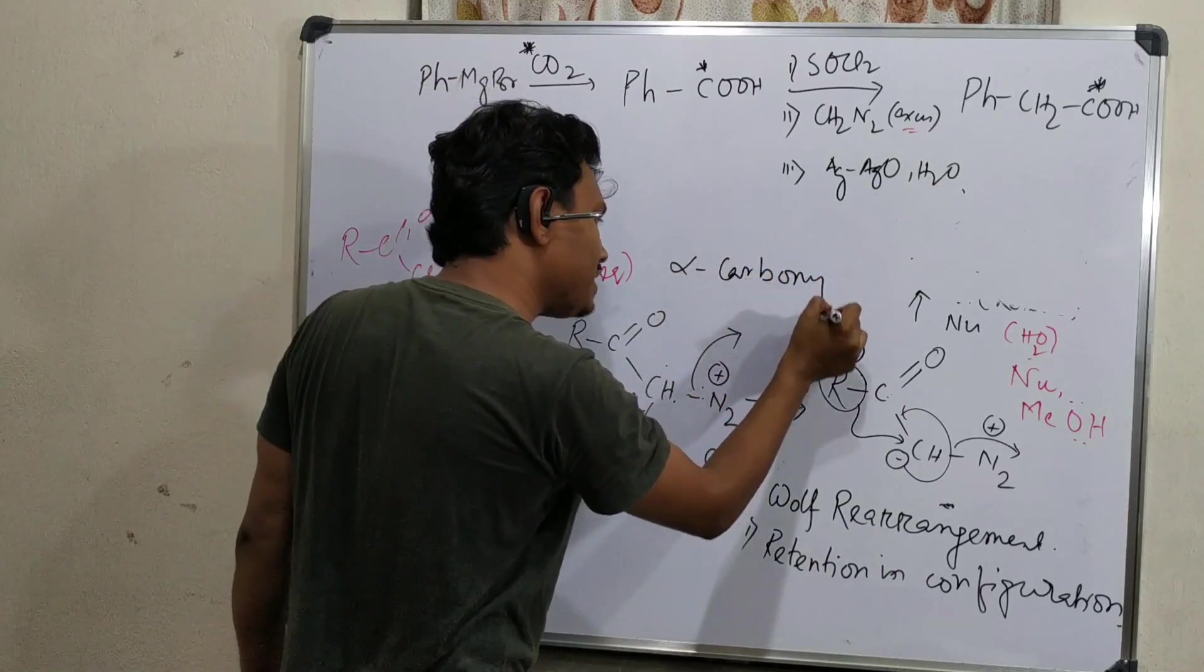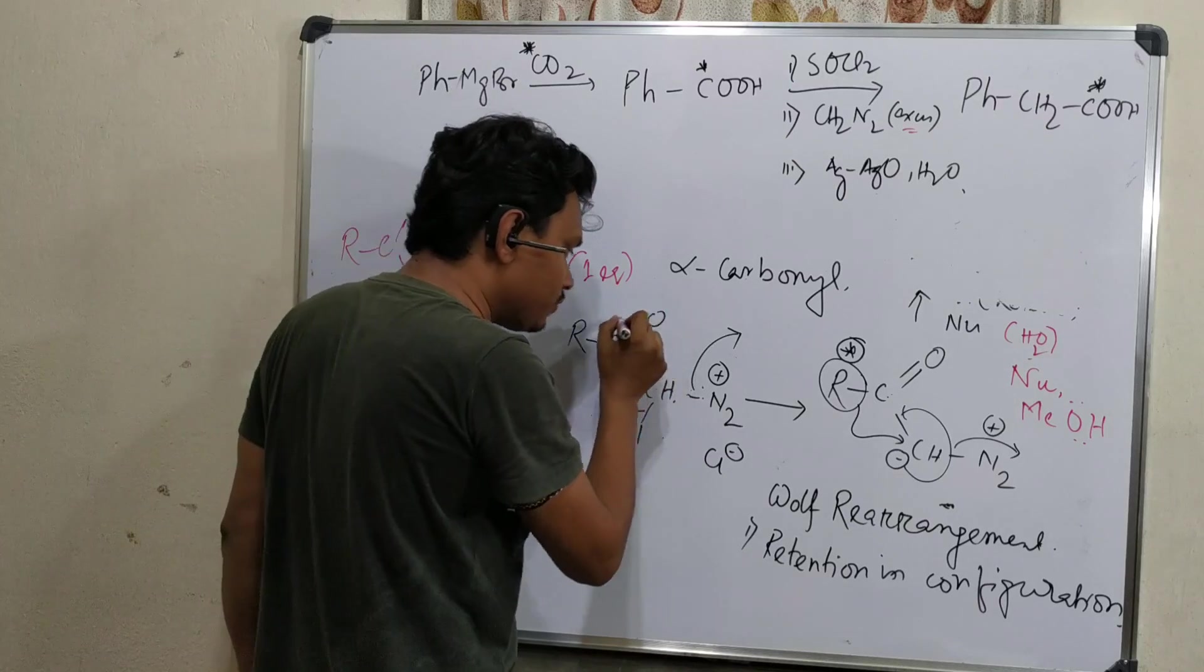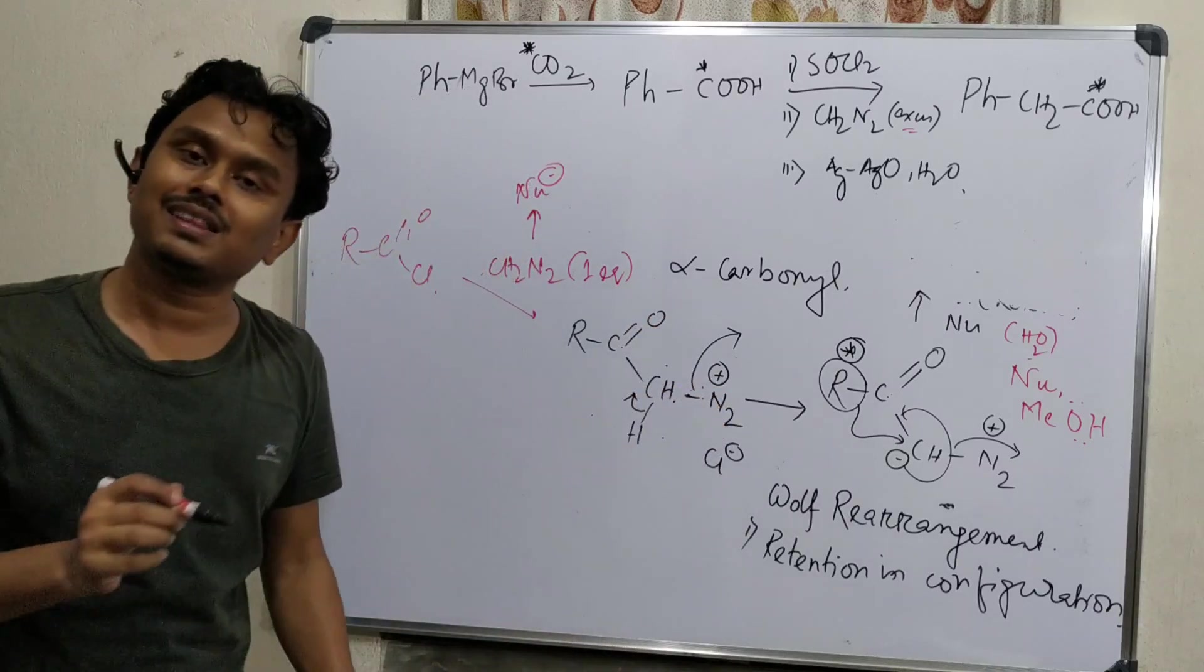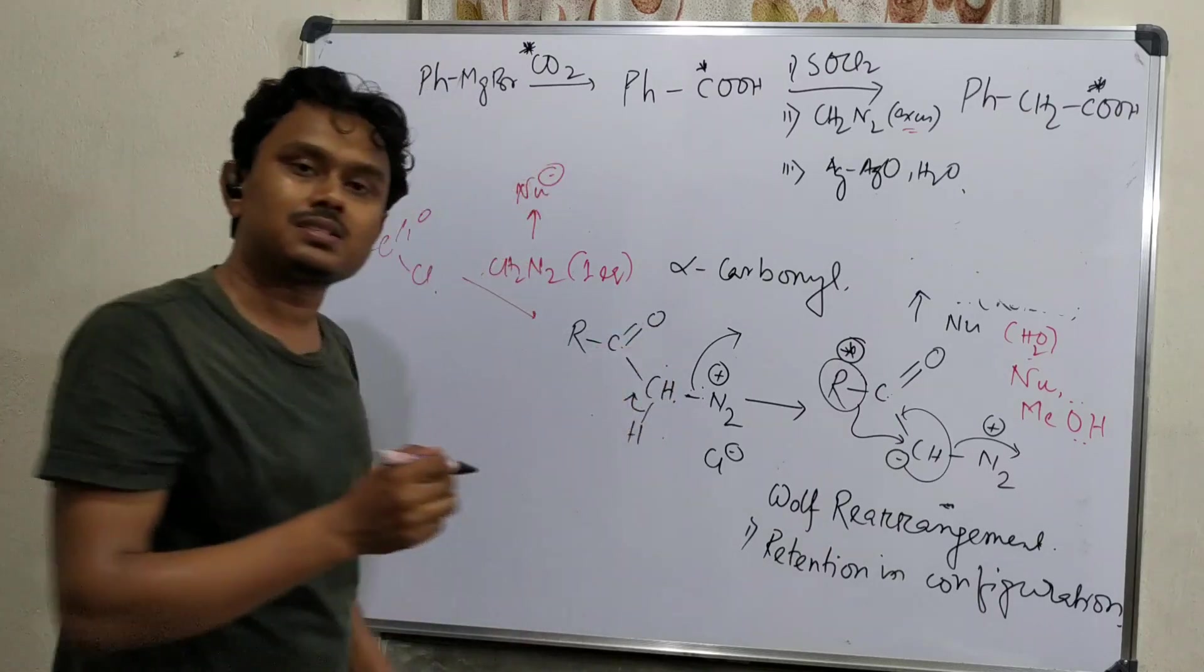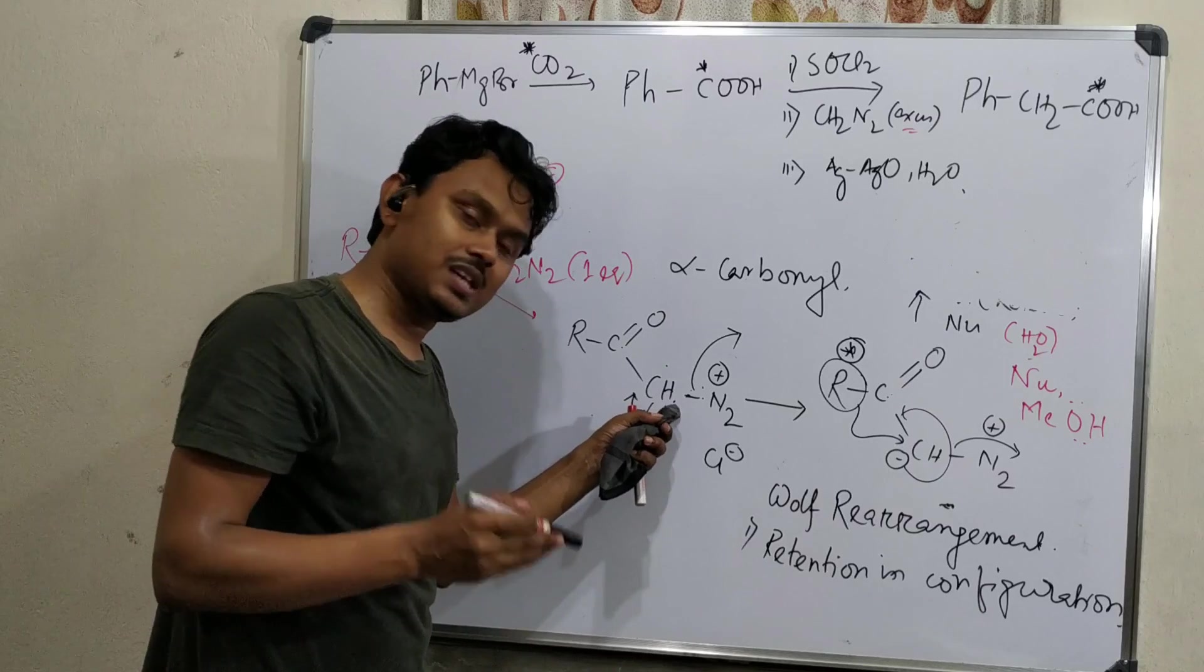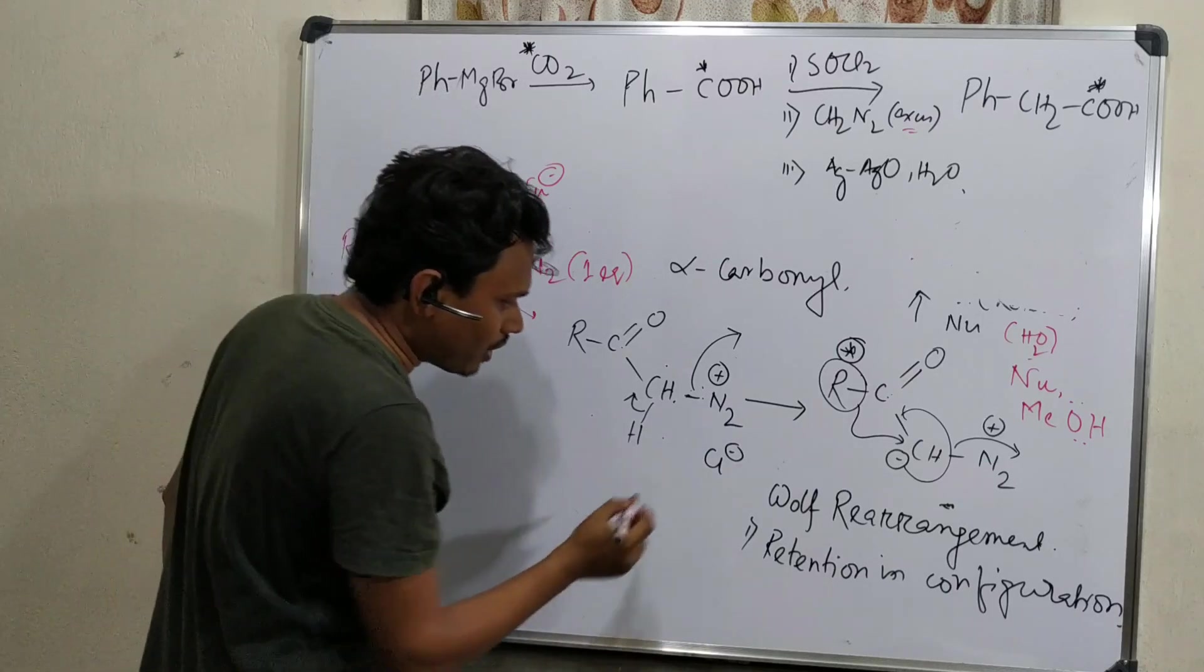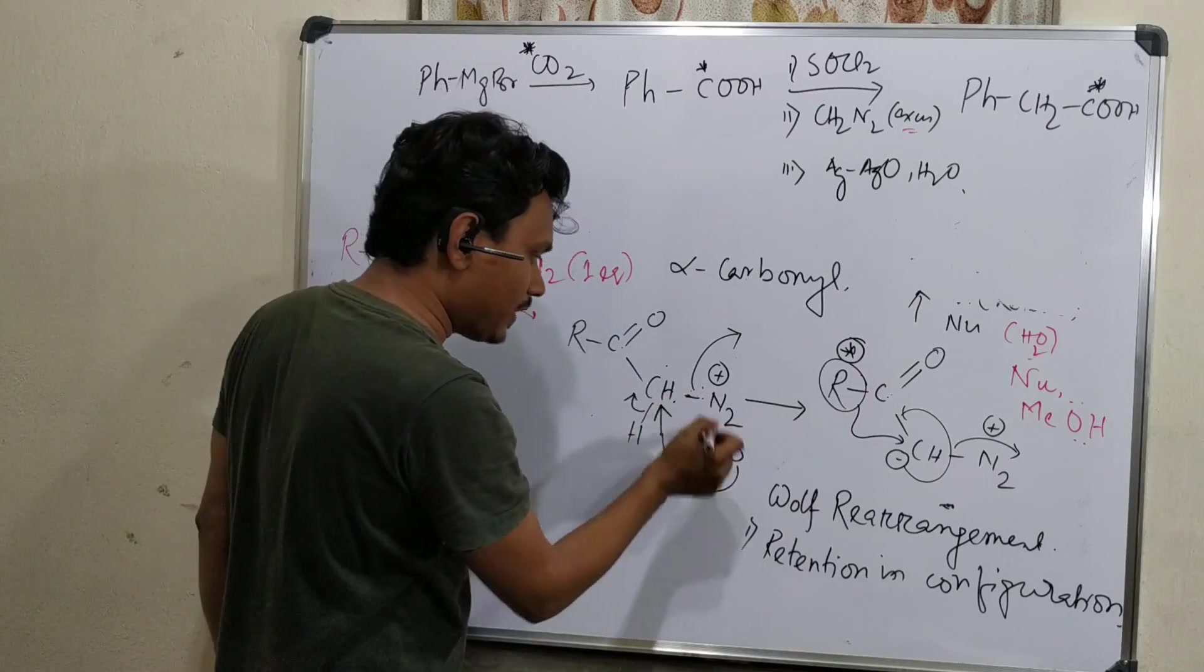I have explained why alpha-halocarbonyl is very much efficient for SN2 reaction because of conjugation with this group, and second is the -I effect. -I effect of both these groups are operating. And another thing: orbital conjugation, sigma star and this sigma star and this pi star, they combine and produce a third molecular orbital which is lowering energy, and that's why this reaction is facile. Please, I have uploaded one video about the SN2 and alpha-halocarbonyl. Please go through that. You will have a clear knowledge.